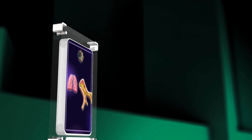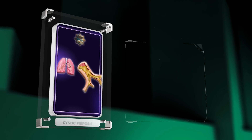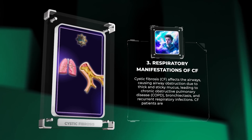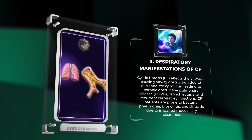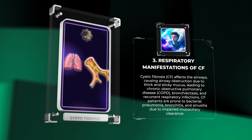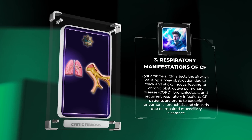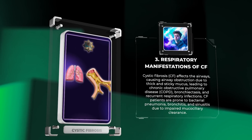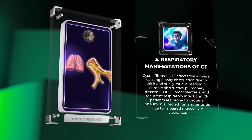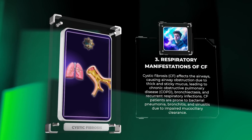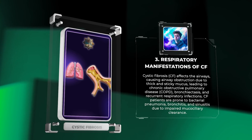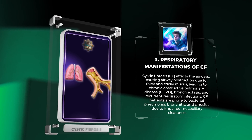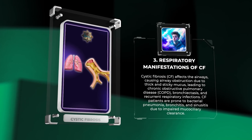Cystic fibrosis affects the airways, causing airway obstruction due to thick and sticky mucus, leading to chronic obstructive pulmonary disease (COPD), bronchiectasis, and recurrent respiratory infections. CF patients are prone to bacterial pneumonia, bronchitis, and sinusitis due to impaired mucociliary clearance.